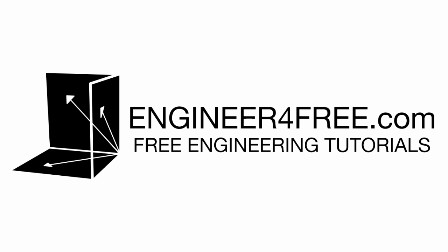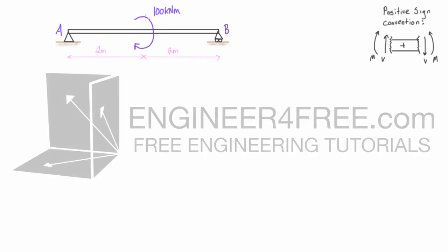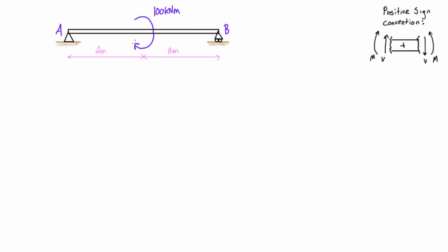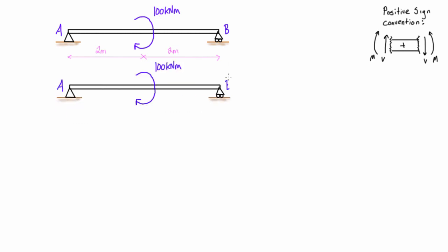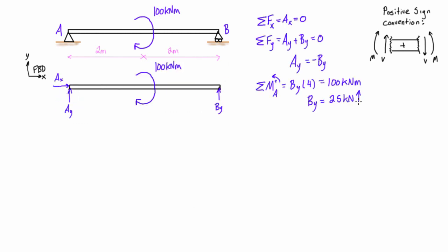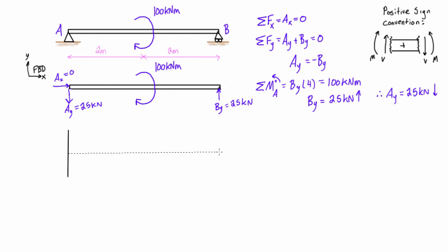Welcome back. In this video we are drawing the shear force diagram and bending moment diagram for a simply supported beam that has an applied moment right at the center of the span. The first thing we do is draw the free body diagram and solve for the reactions. We find that Ay is 25 kN pushing down and By is 25 kN pushing up. So we're ready to draw our shear force diagram now.